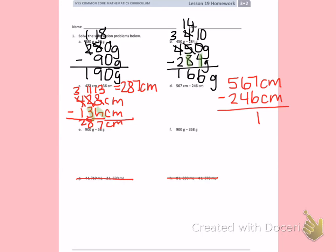6 minus 4, I can also subtract because the larger number is on the top. 6 minus 4 is 2. 5 minus 2 is 3. So I have 321 centimeters.